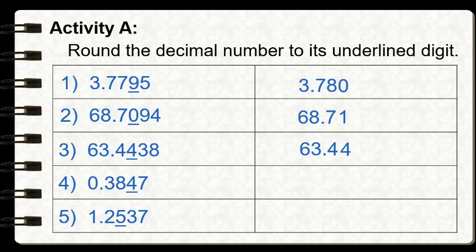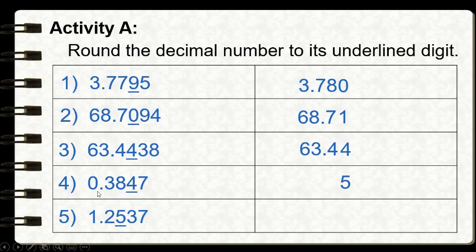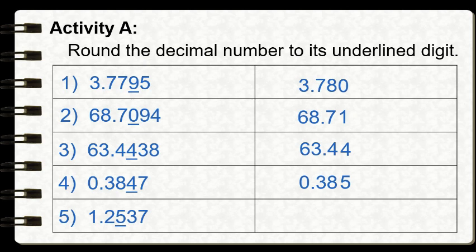Number four: three thousand eight hundred forty-seven ten-thousandths, with the underlined digit four occupying the thousandths place. The digit to the right of our rounding place is seven. Since seven is greater than five, we round up — one plus four equals five. We copy all digits to the left of our rounding place — thirty-eight hundredths — and drop seven. Our answer is thirty-eight hundred fifty thousandths.